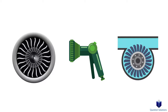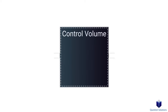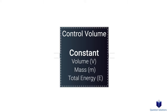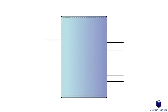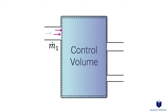In other words, there is no change with time. So the volume, mass, and the total energy content of the control volume stays the same. Also, the mass that enters the system is equal to the mass that leaves the system. So to simplify things, imagine we have a system like this. Here, we have some mass flow entering the system — we will say 10 kilograms per second. On the other side, we have two exits.